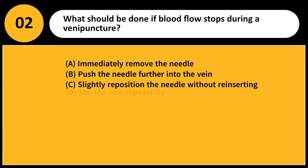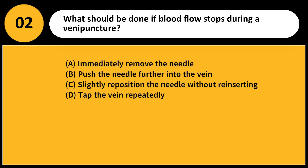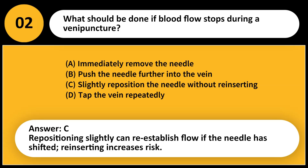What should be done if blood flow stops during a venipuncture? A. Immediately remove the needle. B. Push the needle further into the vein. C. Slightly reposition the needle without reinserting. D. Tap the vein repeatedly. Answer: C. Repositioning slightly can reestablish flow if the needle has shifted; reinserting increases risk.